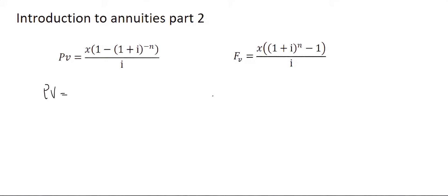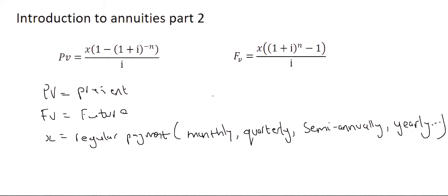These are the two formulas, the future value and the present value. So PV will be the present, FV is the future. X is always going to be your regular payment, which could take on various forms. It could be monthly, quarterly, semi-annually, yearly, and then there's a few others like daily, for example.